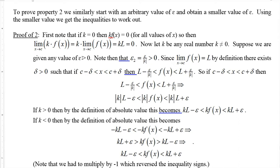Now suppose we're given any positive epsilon. We choose a new value epsilon_2 equal to epsilon divided by the absolute value of k. Since k is not zero, the absolute value of k is positive, so epsilon_2 is a positive number. Since the limit of f(x) as x approaches c is L, by definition there exists a delta greater than zero such that if x is between c minus delta and c plus delta, then f(x) is between L minus epsilon/|k| and L plus epsilon/|k|.